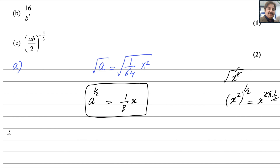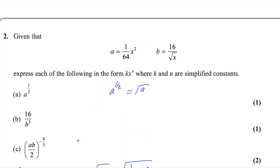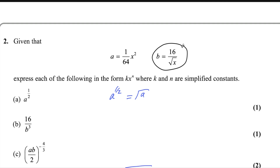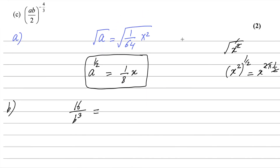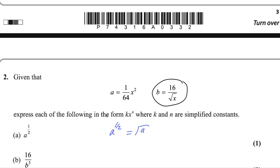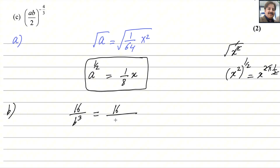For the second part, we need to find 16 over b cubed. The easiest way is to substitute the value of b. So this will equal 16 divided by the cube of b, where b is 16 over the square root of x — so the denominator is (16 over √x) cubed.